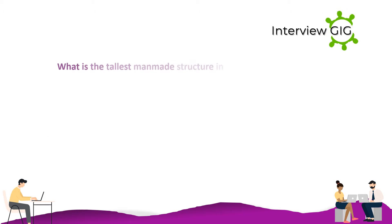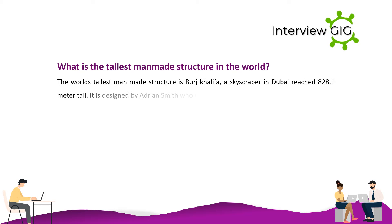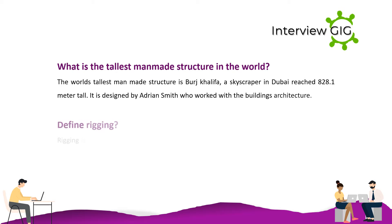What is the tallest man-made structure in the world? The world's tallest man-made structure is Burj Khalifa, a skyscraper in Dubai reaching 828.1 meters tall. It was designed by Adrian Smith, who worked with the building's architecture firm.